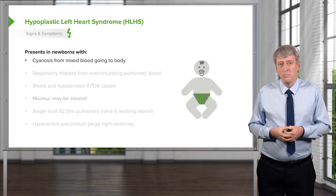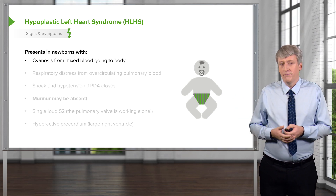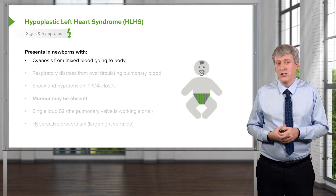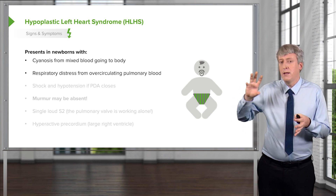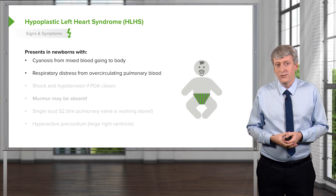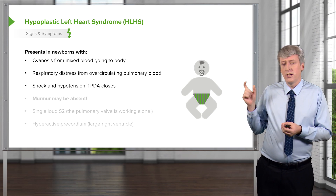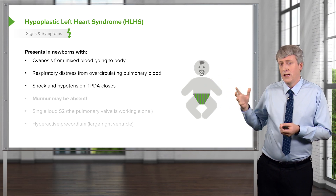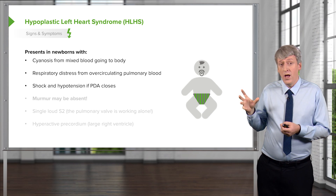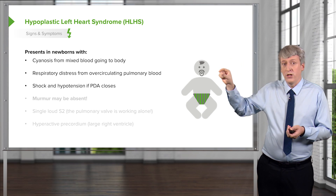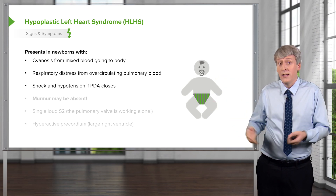Patients with hypoplastic left heart syndrome will appear cyanotic at birth because mixed blood is going out to the body, though this is not classified as one of the cyanotic heart disease conditions. They will be in respiratory distress, typically from over-circulating pulmonary blood — more blood keeps going back through the right side and the lungs become congested. They may also have shock or hypotension, especially if the PDA closes. The patent ductus arteriosus is how blood is getting to the body: blood travels through the right side, up into the pulmonary arteries, and crosses over that PDA. If that closes, you'll have difficulty getting blood to the body and the patient becomes hypotensive.